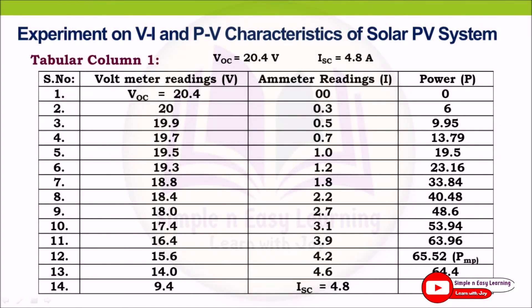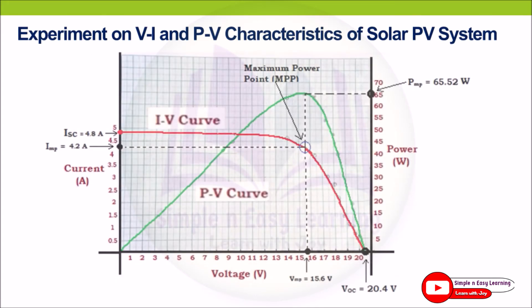The readings are tabulated and the maximum power obtained is 65.52 watts. The corresponding voltage at maximum power is 15.6 V and current at maximum power is 4.2 A. Plotting the IV and PV curve, at the knee point of the IV curve we get the maximum power point: VMP = 15.6 V and IMP = 4.2 A, giving maximum power of 65.52 watts.